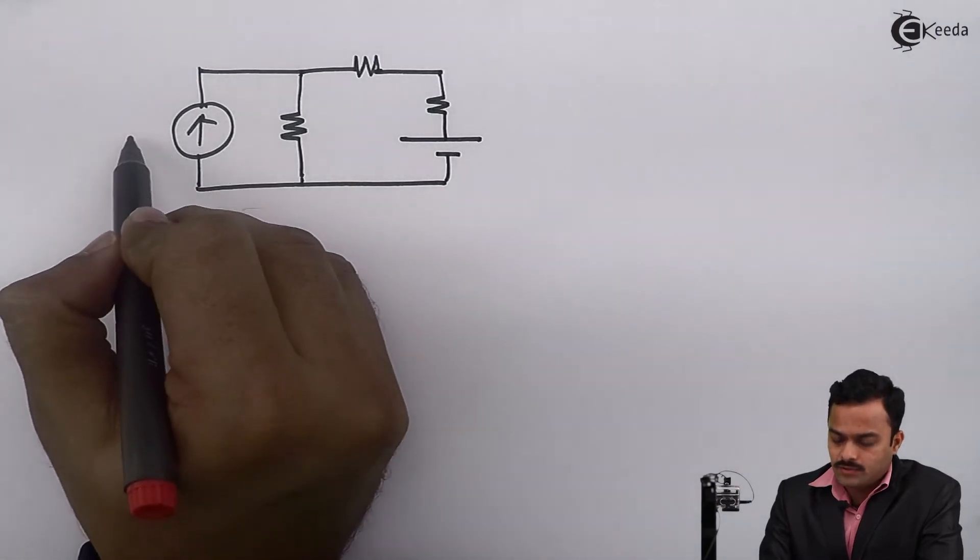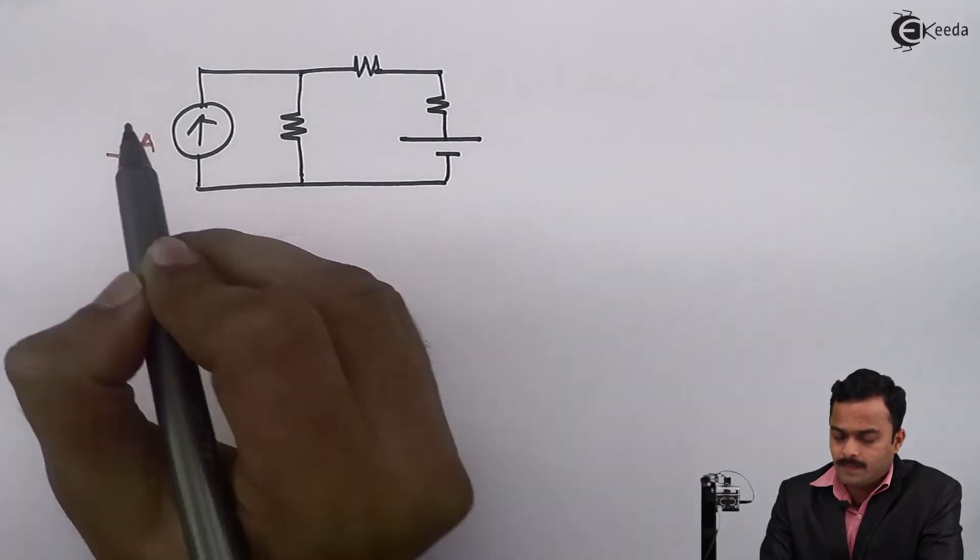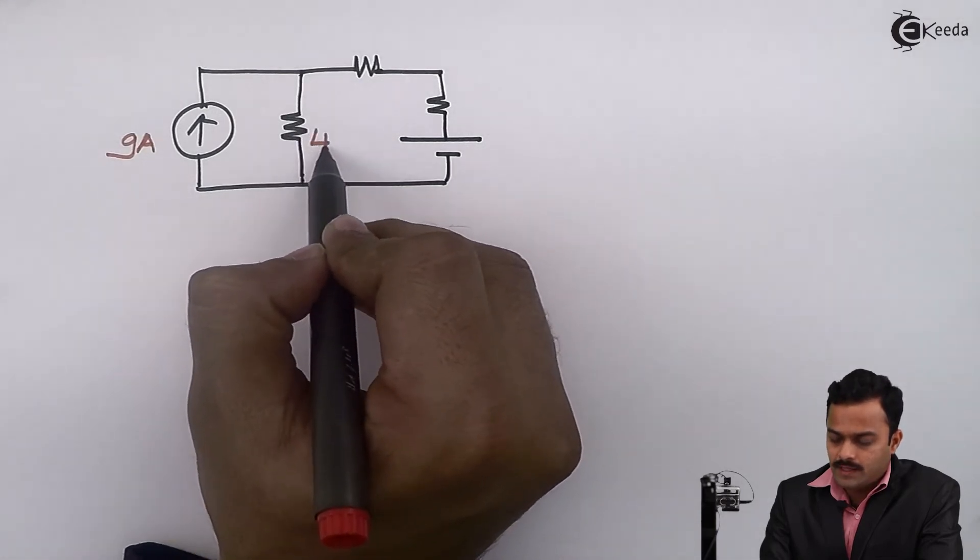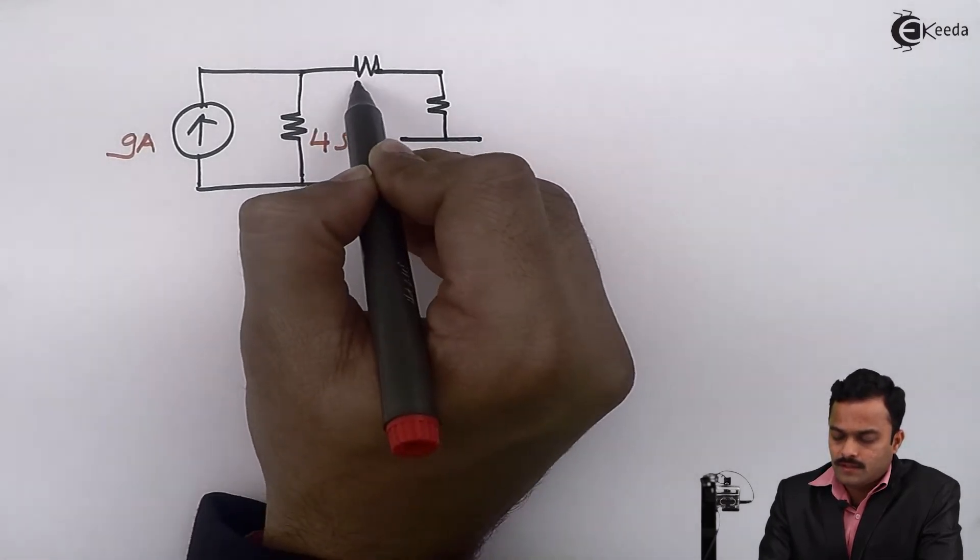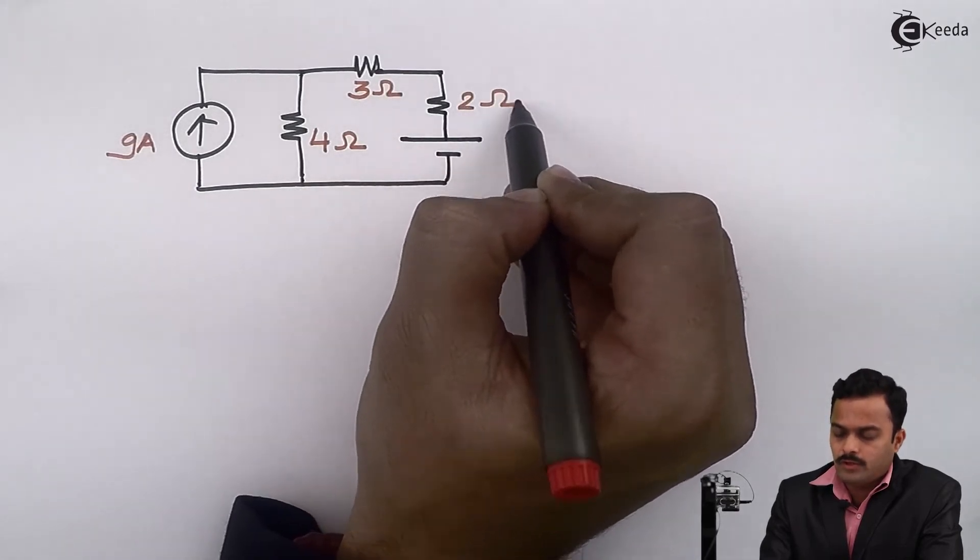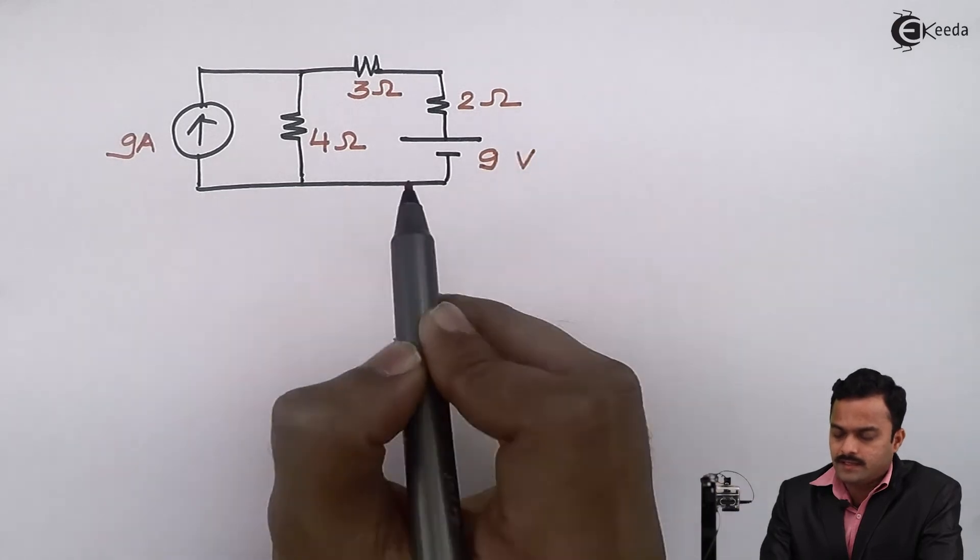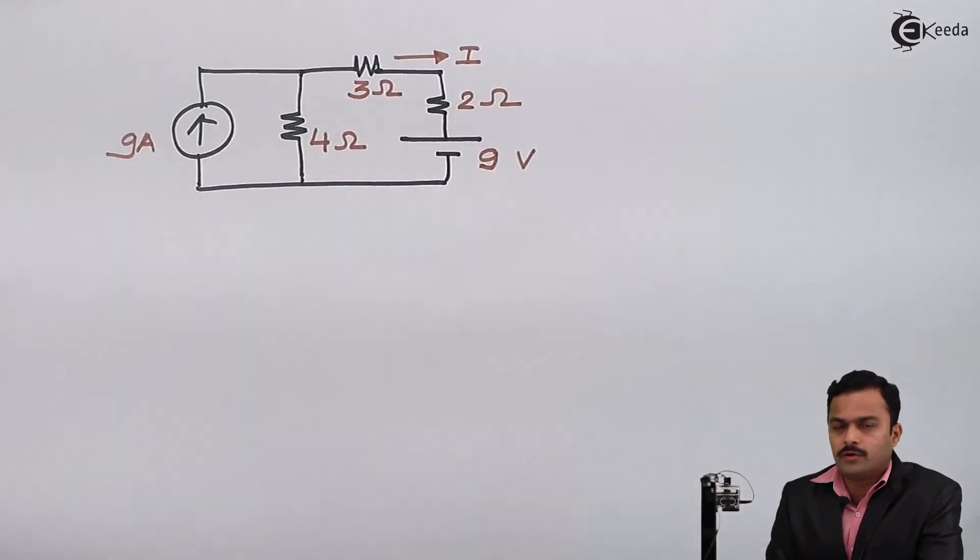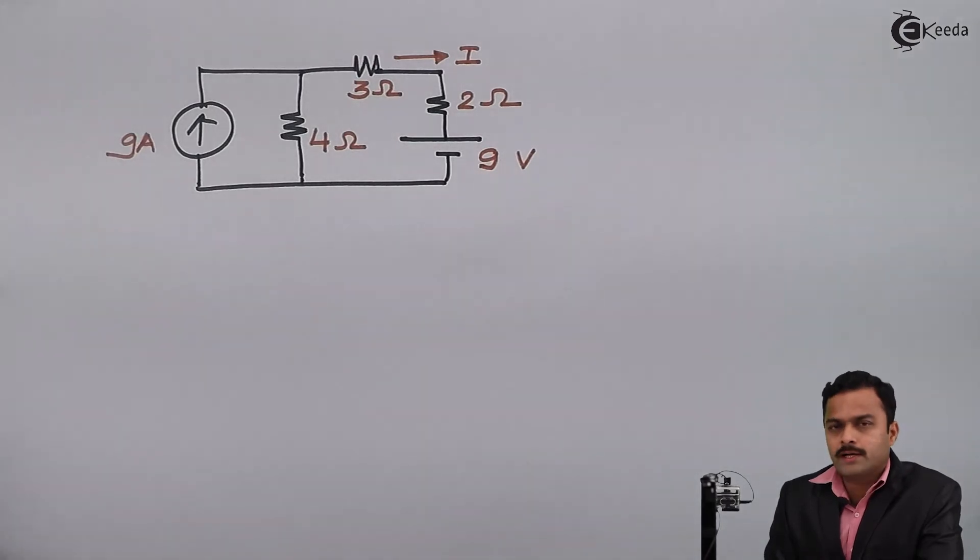The resultant current source will be 9 amperes, and the resultant resistor value we calculated is 4 ohms. 3 ohms remains as it is, 2 ohms will also remain as it is, and the 9 volt battery will be the same. This is the current we have to find.